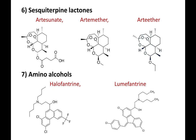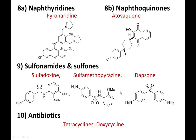There are the sesquiterpene lactones, which are very potent, with a typical mechanism of action involving free radical attack on the plasmodium parasite. These come from Artemisia plants — Artemisia longa — and include artemisinin, artesunate, artemether, and arteether. These originated from Chinese medicine. There are also amino alcohols like halofantrine and lumefantrine, naphthyridines such as pyronaridine, and naphthaquinones such as atovaquone.